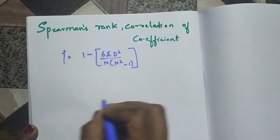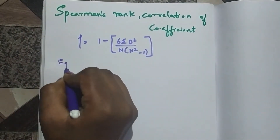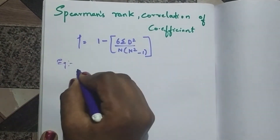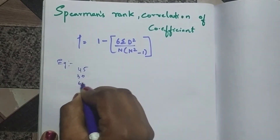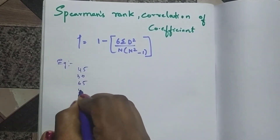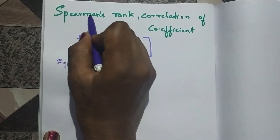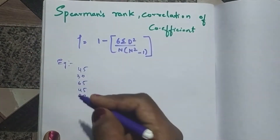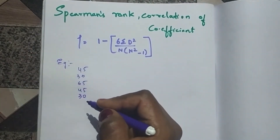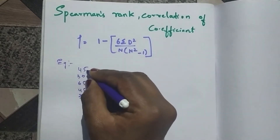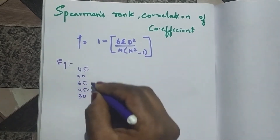For example, I have values 45, 30, 65, 45, 30. The name suggests Spearman's rank, so you have to give rank to these values. Here if you see, I have the same value 45 appearing two times.